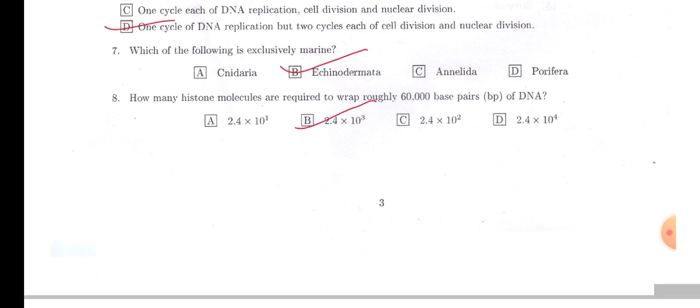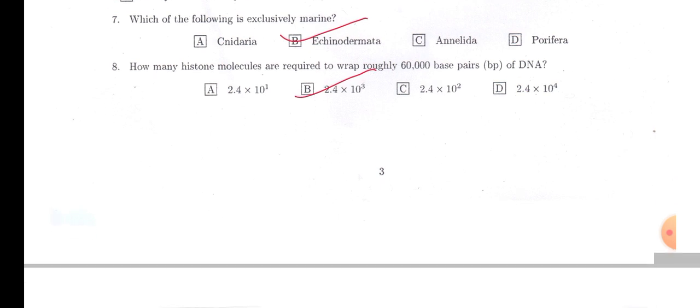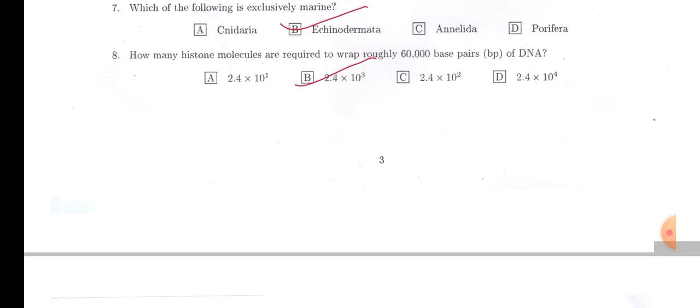In question number eight, you have to calculate something. How many histone molecules are required to wrap around 60,000 base pairs of DNA? So actually around that histone octamer, 200 base pair DNA is wrapped around, so we have to divide 60,000 by 200.